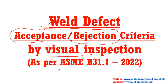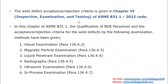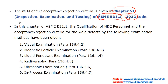This video is as per ASME B31.1 code. ASME B31.1 is the code for power piping. The weld defect acceptance or rejection criteria is given in Chapter 6 of ASME B31.1. This is the 2022 edition — the latest edition — and the name of Chapter 6 is 'Inspection, Examination and Testing.'